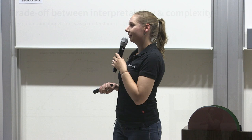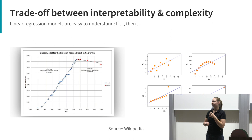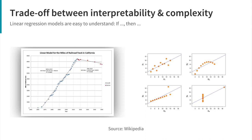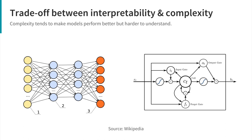Of course, with very simple things like linear regression or logistic regression, it's very easy to understand what happens — you have very clear relationships between variables and outcomes. But with high complexity, it's almost impossible to understand.